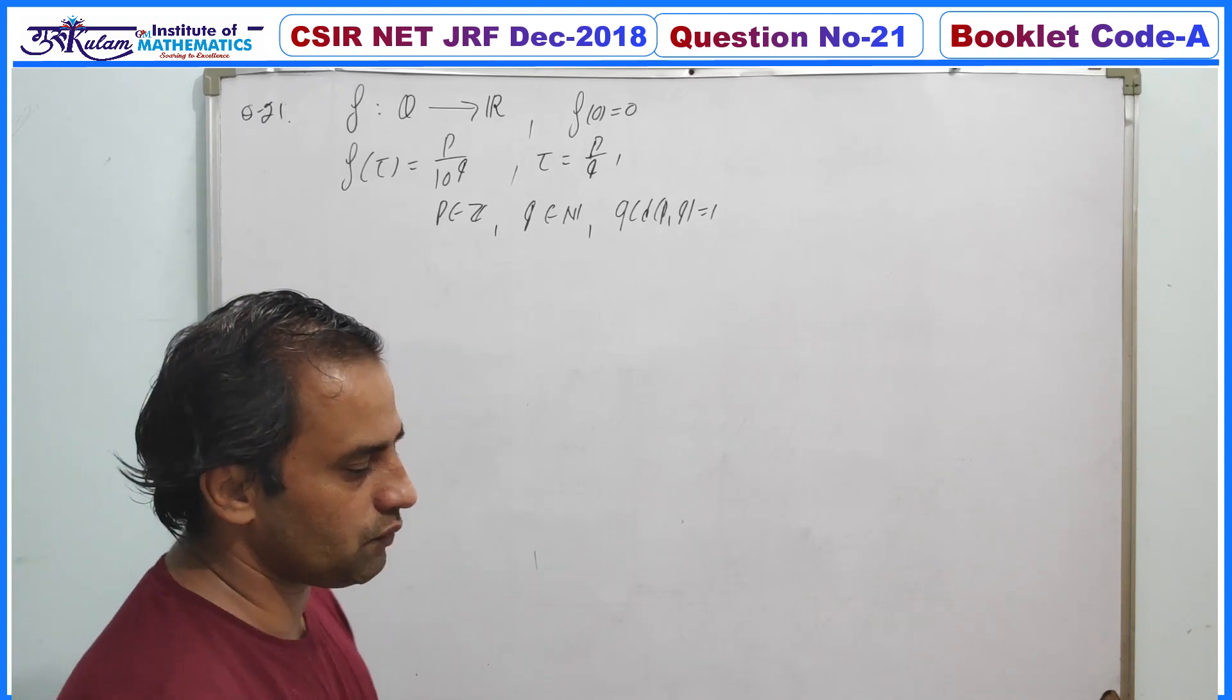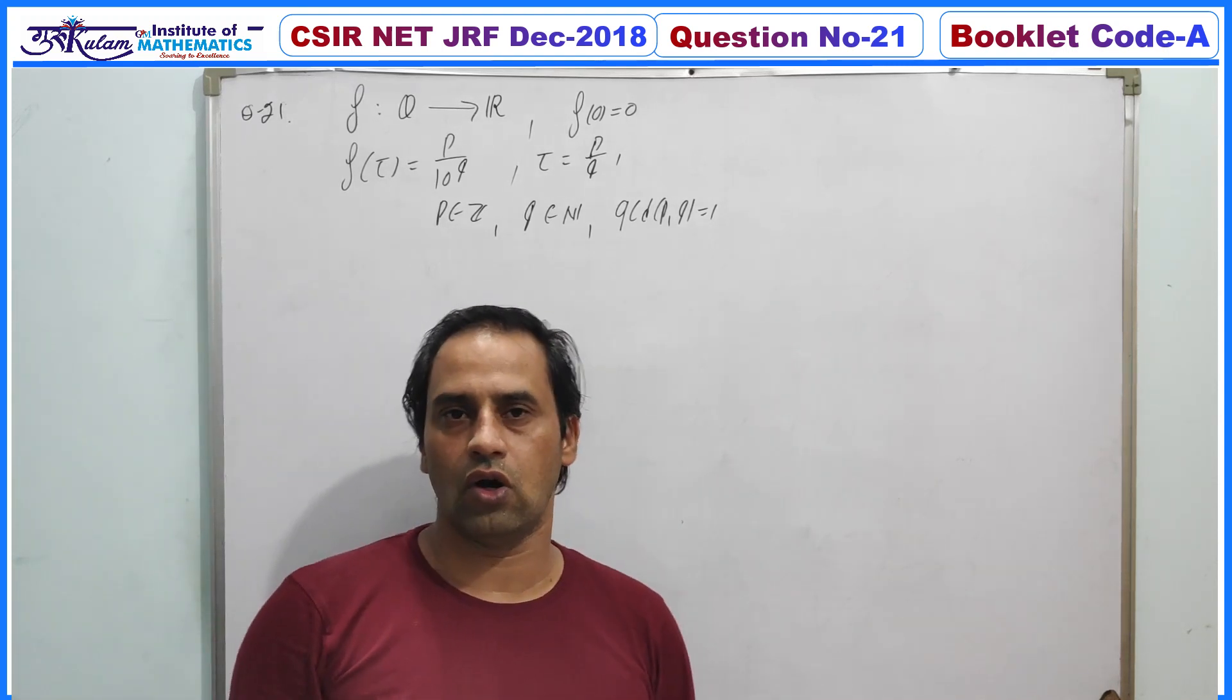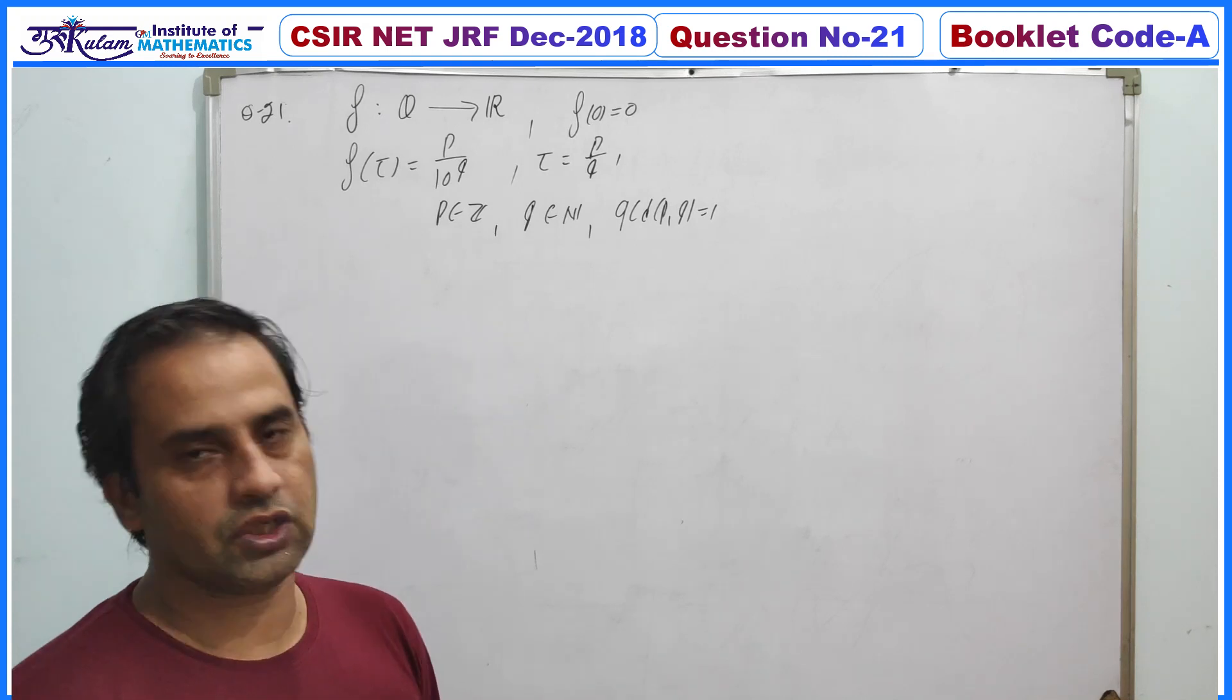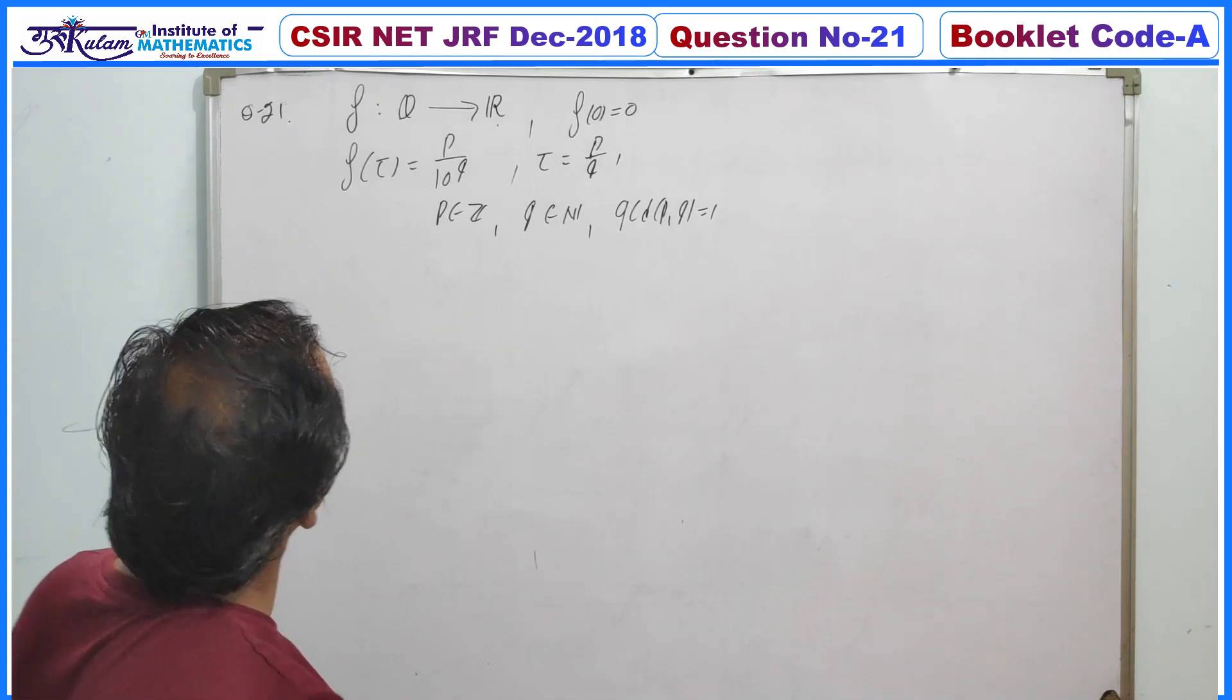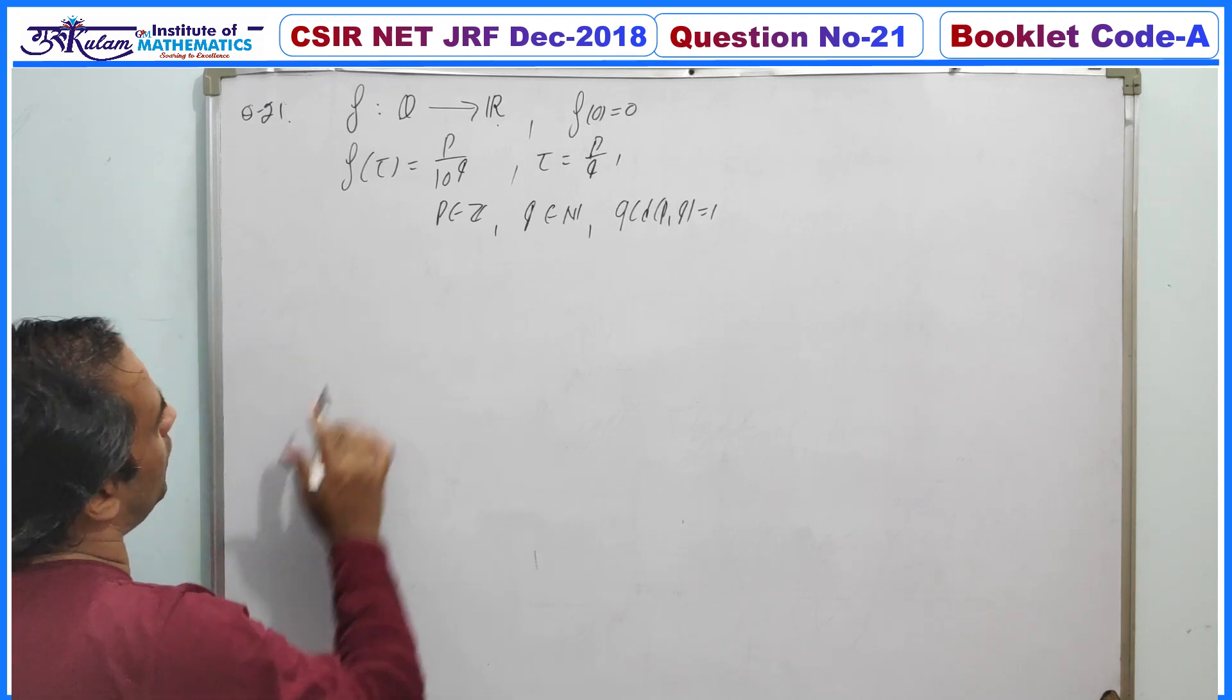Then we have to identify whether this function is one-one or not, and whether it is onto or not. The solution is: f is a function from Q to R.